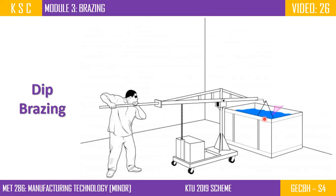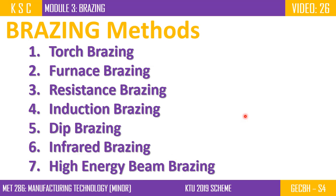This is the case for a small workpiece. If you want to make a deep bracing, there is a limit. If this is a small part, you can use dip bracing. So we have torch bracing, furnace bracing, resistance bracing, induction bracing, and dip bracing.